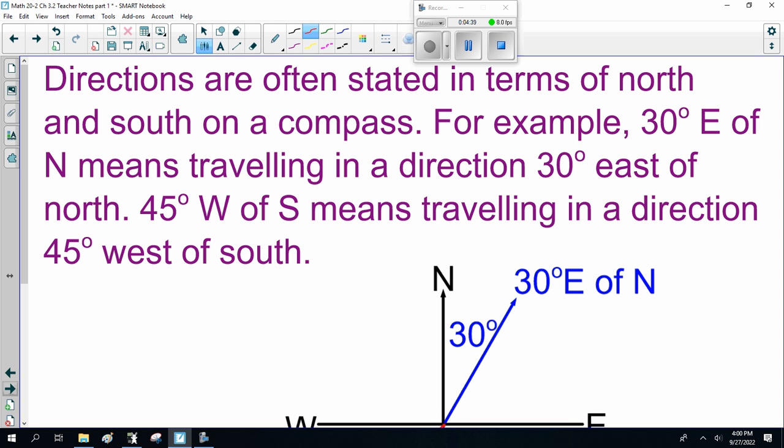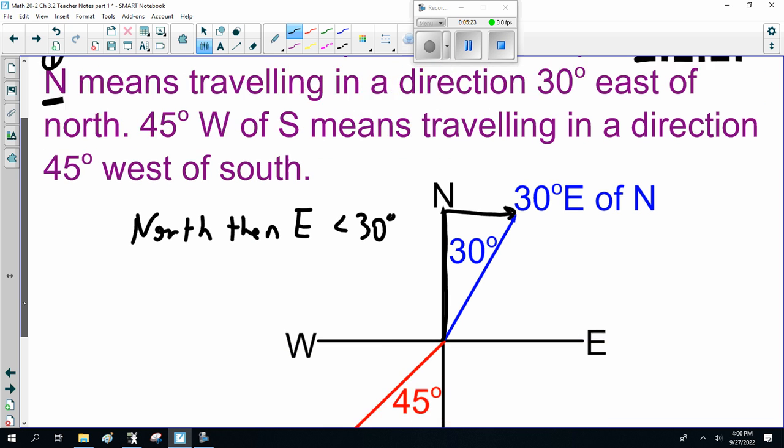So, before we go on, we've got to talk about directions. Now, directions are often stated in terms of north and south on a compass. For example, 30 degrees east of north means traveling in a direction 30 degrees east of north. 45 degrees west of south means traveling in a direction 45 degrees west of south. So, 30 degrees east of north, that's going north, then east to make an angle of 30 degrees. If you go north, then you go east. So, it's actually written backwards. First thing you do is go north. The second thing you do is go east, and the third thing is you stop when you make the angle.